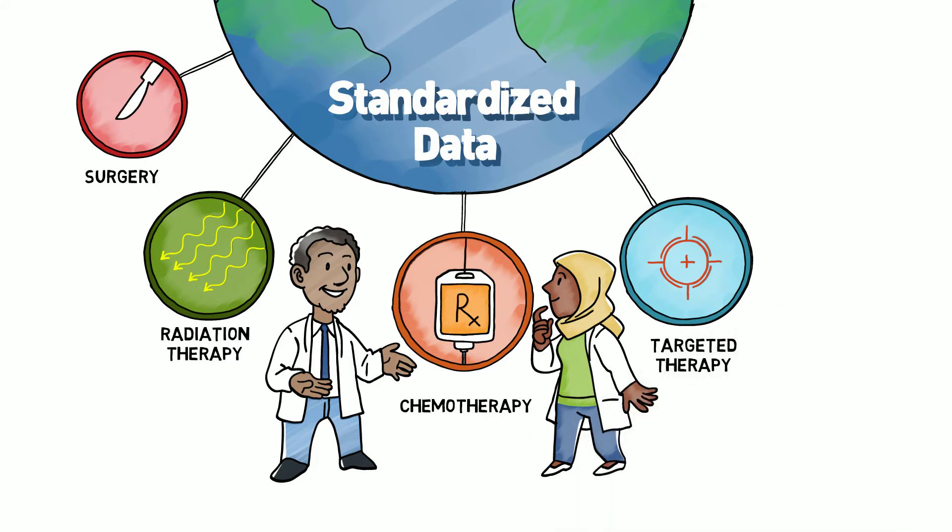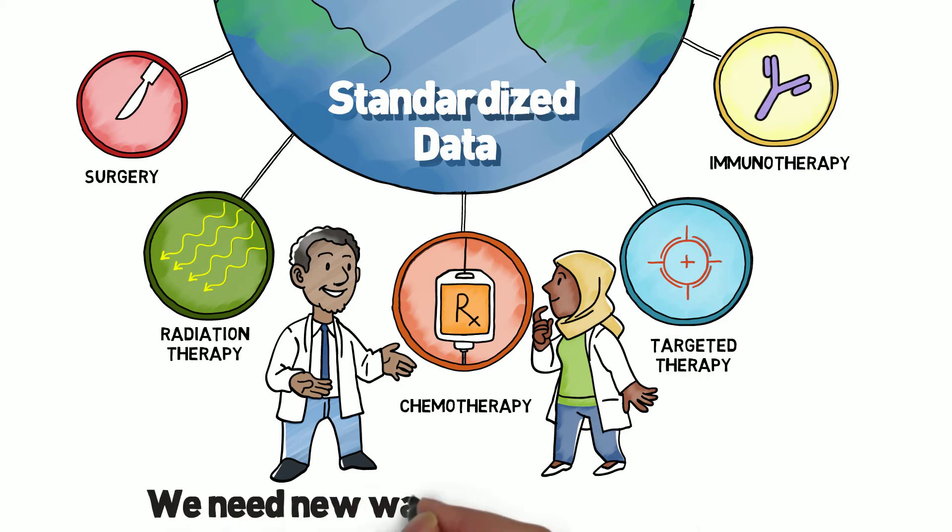Targeted therapy may help without shrinking tumors. Immunotherapy may actually cause them to grow bigger before they shrink. With so many treatment possibilities, we need new ways to measure efficacy.